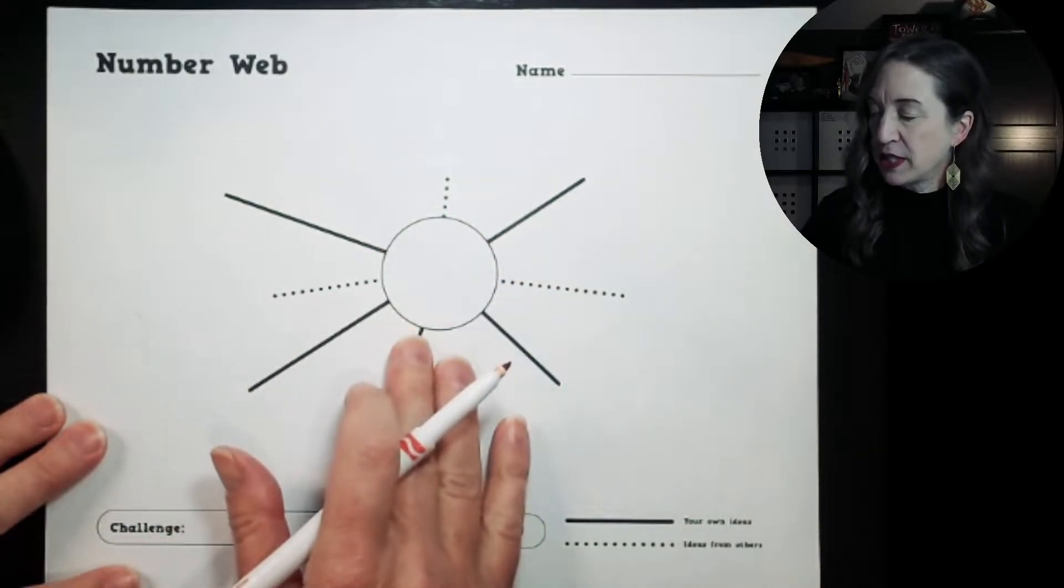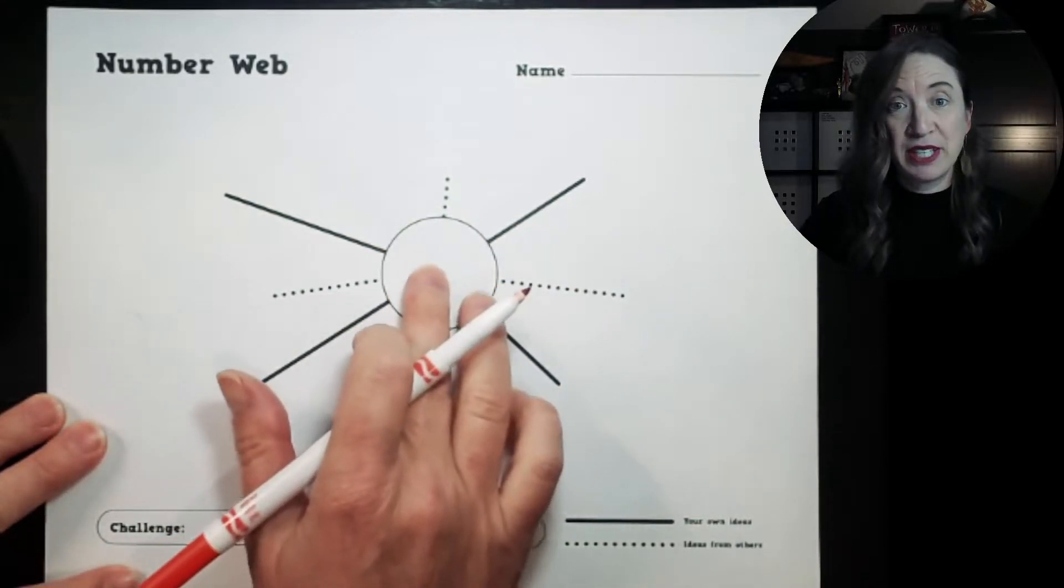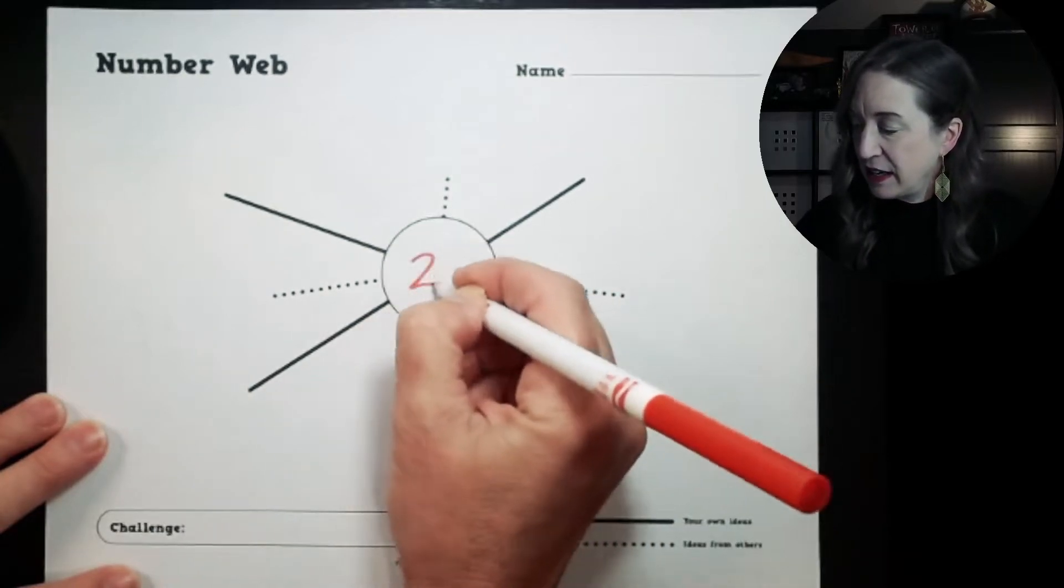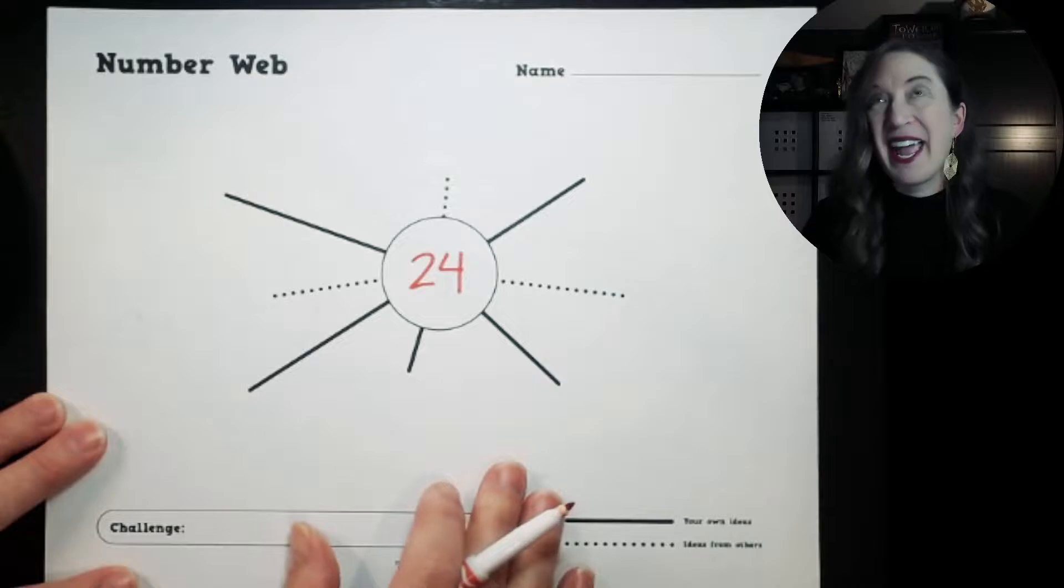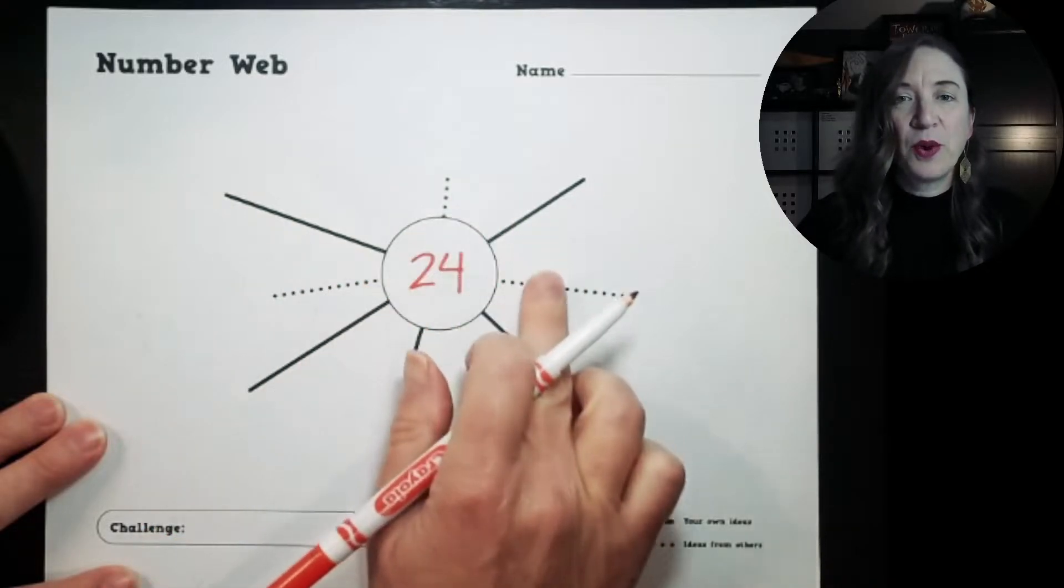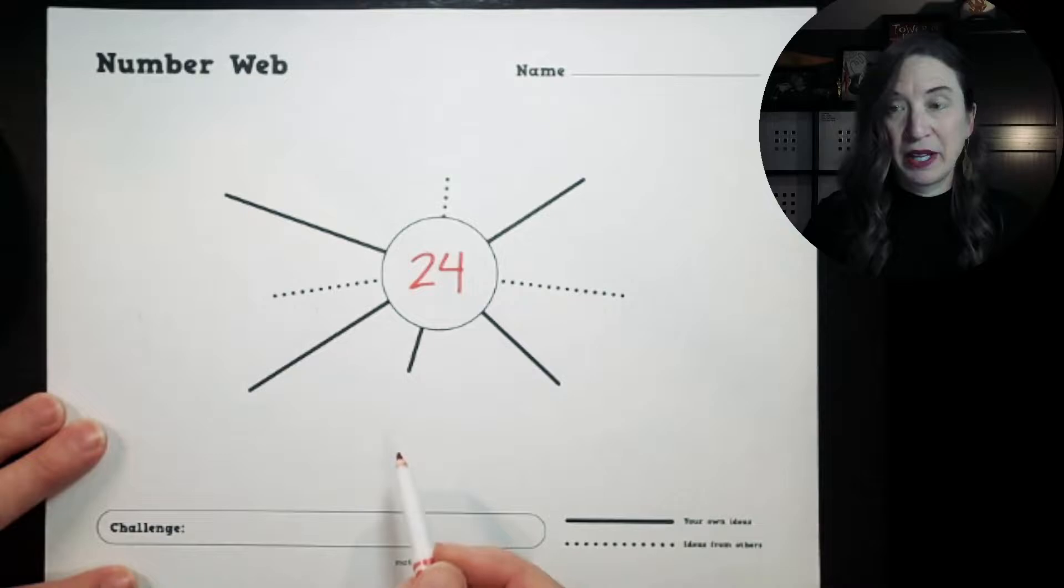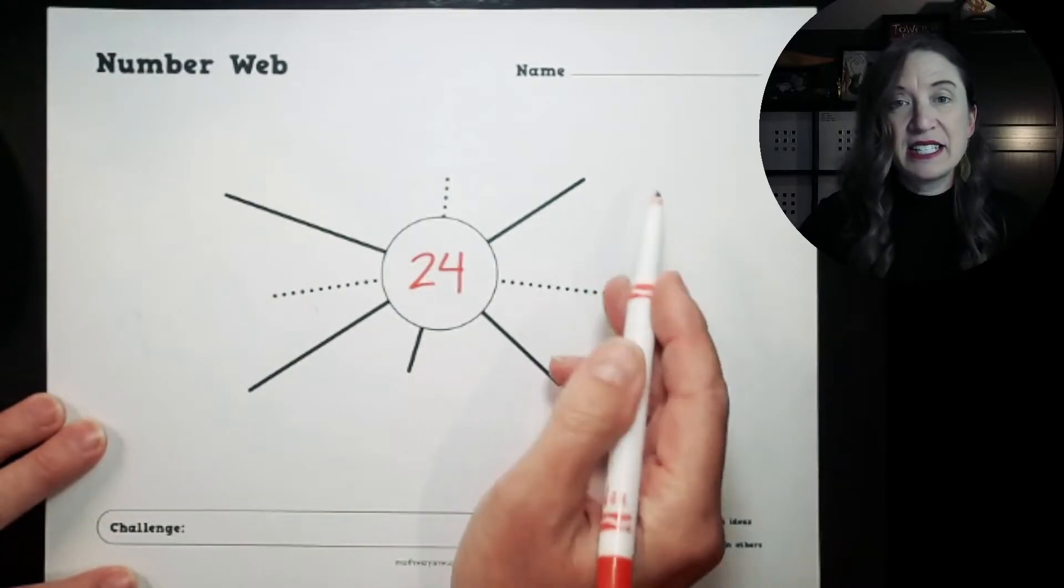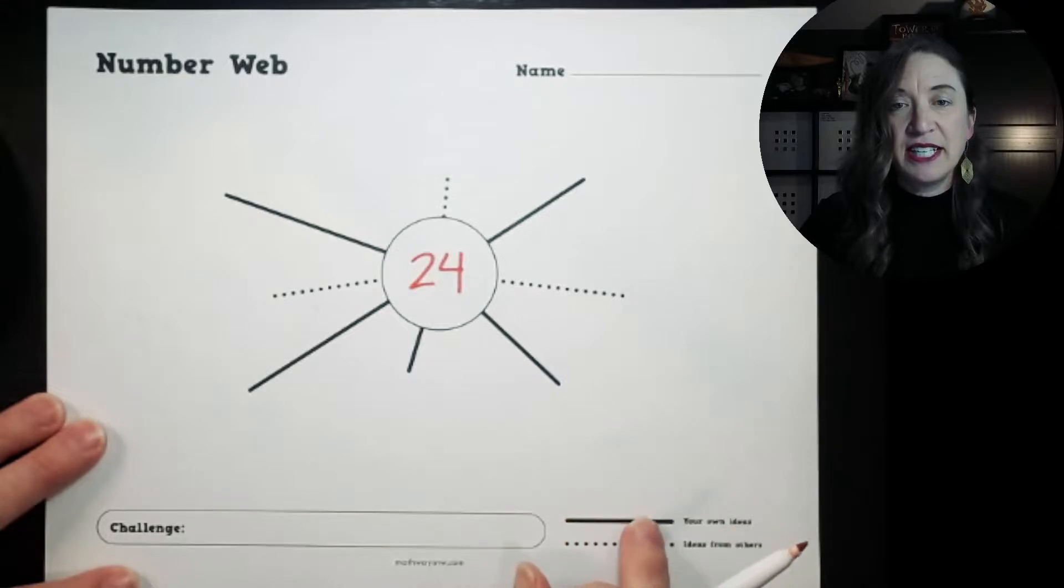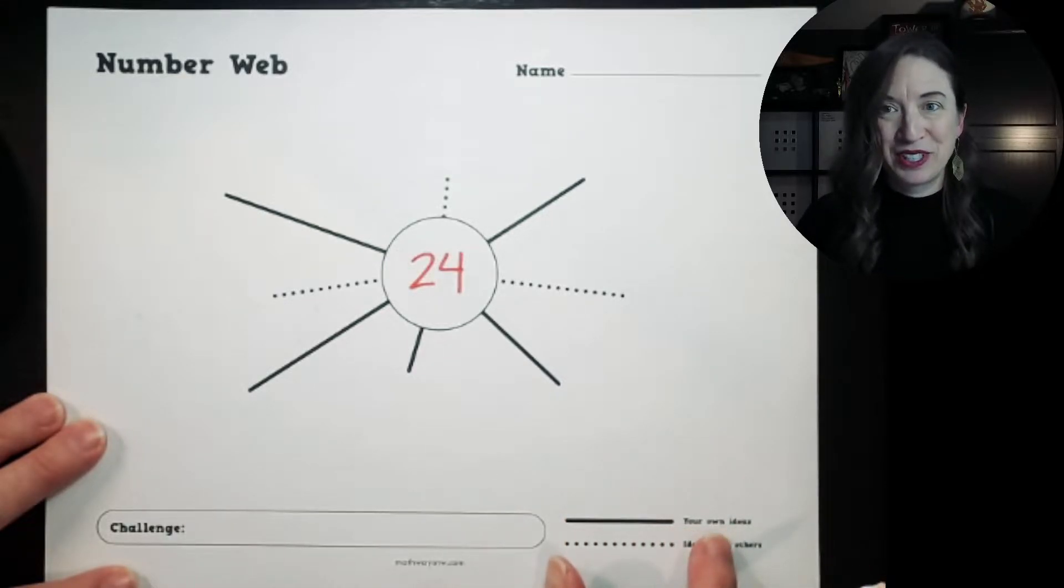So your teacher or someone might give you a number to put in the middle. Today we're going to do 24 as the example. Then you'll notice around the circle with the number there are some lines. There's five solid lines, and at the ends of those lines you'll see the key down here—those are for you to write your own ideas of how you can express 24.